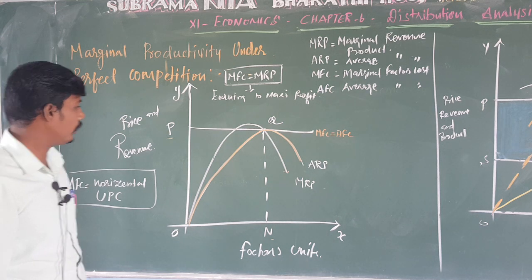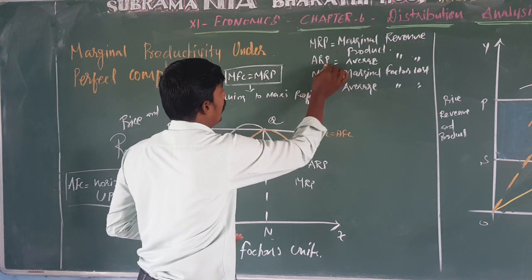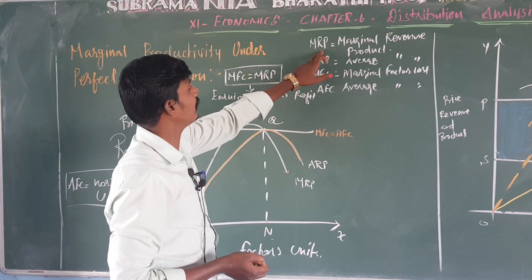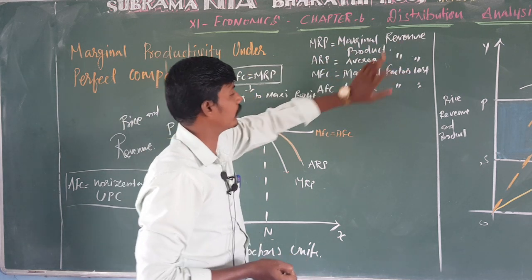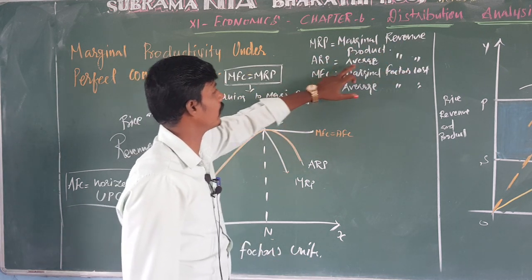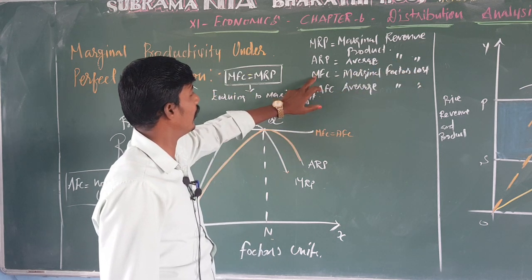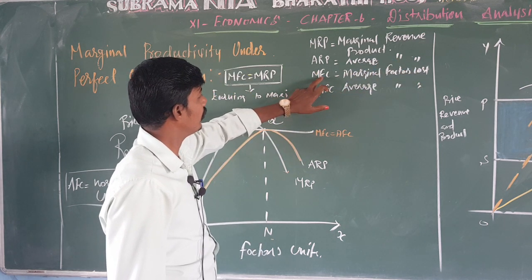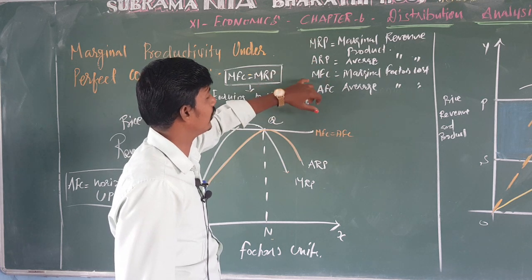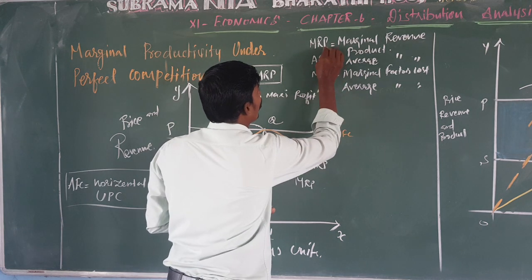First of all, we have four curves: MRP, ARP, MFC, and AFC. MRP is the marginal revenue product. ARP is the average revenue product. MFC is the marginal factor cost. AFC is the average factor cost.